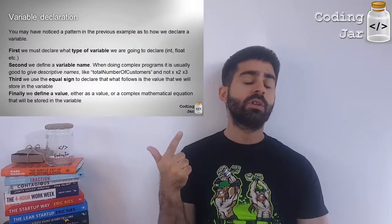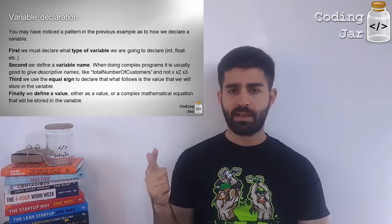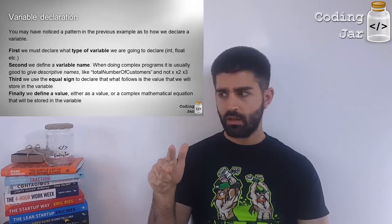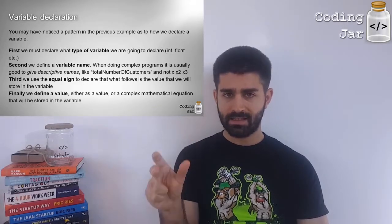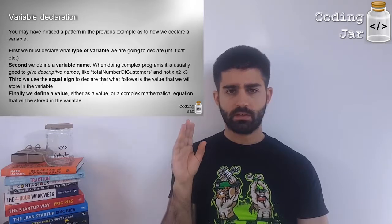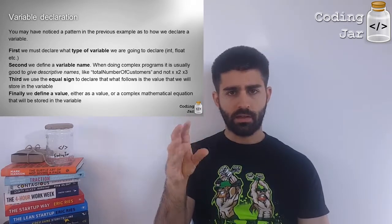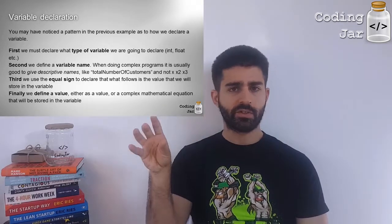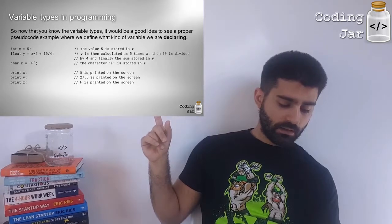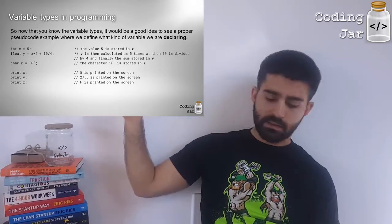So now that you know about the variable types, it's a good idea to show you how you declare a variable in programming. First you use the variable type. Is it an integer, a float, a boolean, what is it? Then we define a name for that variable. So for instance here we have x. Then we use the assignment character, which means whatever follows the equals character is gonna be calculated to a value and that value is gonna be assigned to the variable. You don't always have to assign a value to a variable, but it's a good idea to always start your variables with a value. Like even if you don't want them to have value, you can put a zero there and then change it to whatever you want. You can see here that we have shown how to declare an integer, a float, a character, and what they print on the screen.